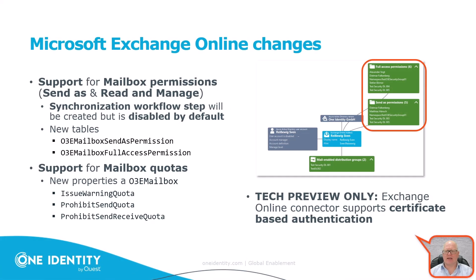There is now support for mailbox permissions: send as, and read and manage. These are part of the synchronization workflow steps. They get created but are disabled by default. There are two new tables, both starting with O3E: mailbox send as permissions and mailbox full access permissions. Disabled by default means they are off, and they can be activated to take effect.